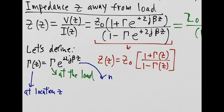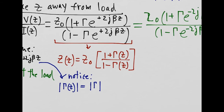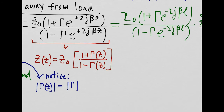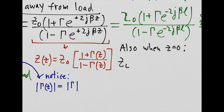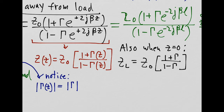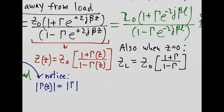Notice that the magnitude of the reflection coefficient anywhere on the transmission line is equal to the magnitude of the reflection coefficient at the load. Also, when you are right at the load and z is equal to zero, then the impedance is Z-L, the load impedance, which is equal to Z-naught multiplied by 1 plus gamma divided by 1 minus gamma.